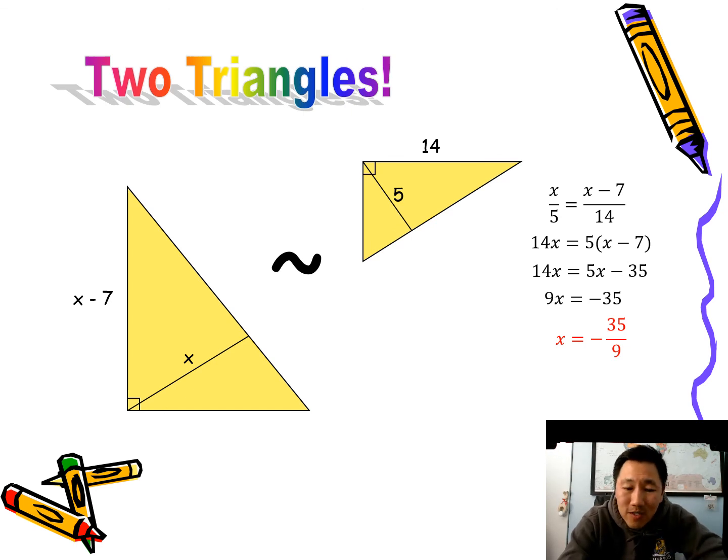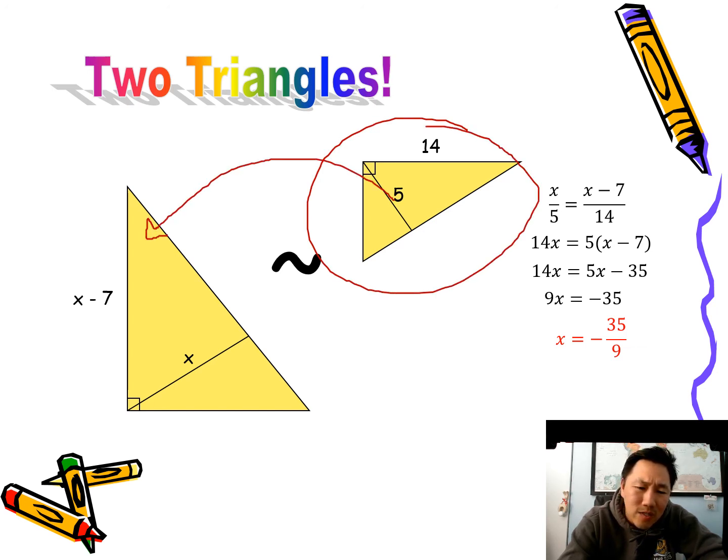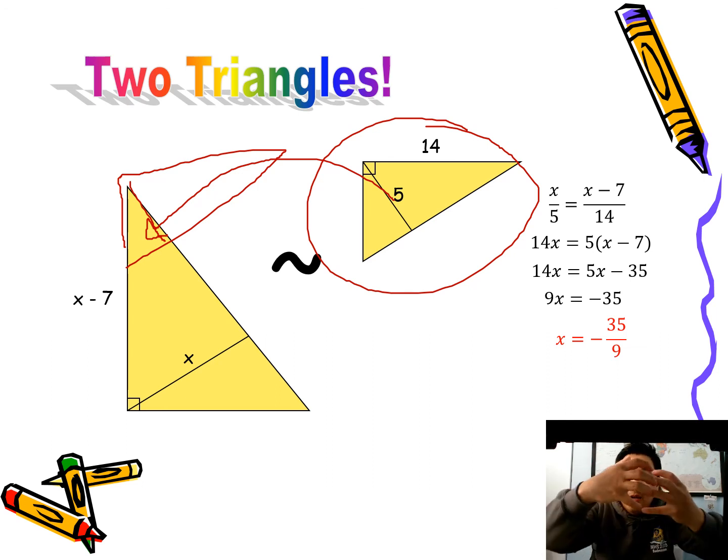Now this one wasn't too hard to do, but the one on the homework is a little bit trickier, only because they drew this triangle inside this triangle, so it got confusing. So when it gets confusing like that, make sure you take the two triangles and draw them out separately.